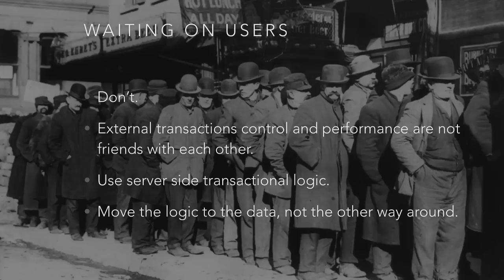That's one of the reasons people have spent so much time developing ORMs and they still don't perform the way you want — because what you really want to do is move all logic to the data. Any time you're going back and forth on a network, you have to get concurrency to hide that latency, you have to have shared data structures, and you're not going to go 100 times faster. So use server-side transactional logic. Move the logic to the data, not the other way around. VoltDB enforces this.